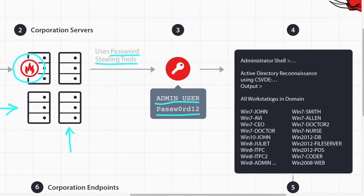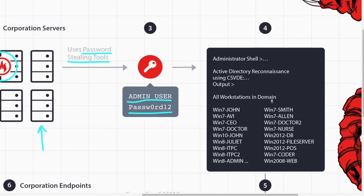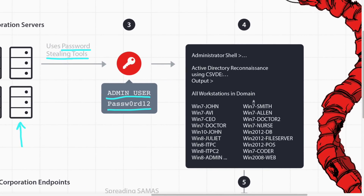The next step is to gather information about the domain environment. The easiest and stealthiest way to do this is through Active Directory reconnaissance. Why? Because the Active Directory is a database that stores all users, servers, endpoints, and applications. With one command — csvde — he obtains all the endpoint names in the domain.